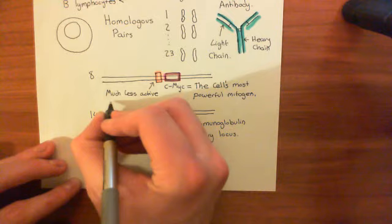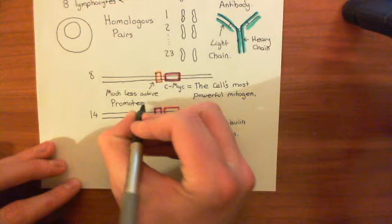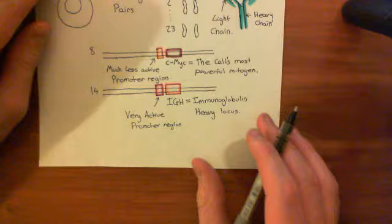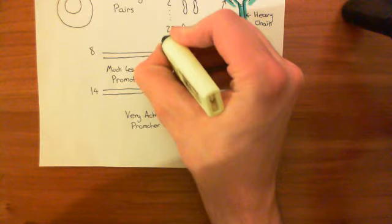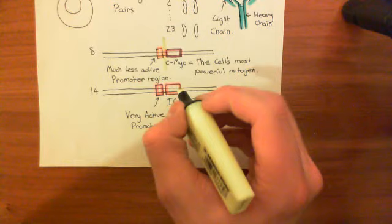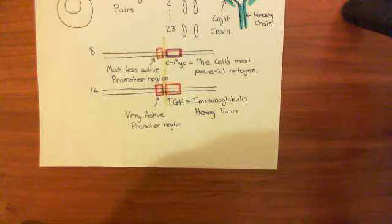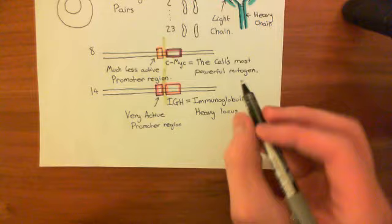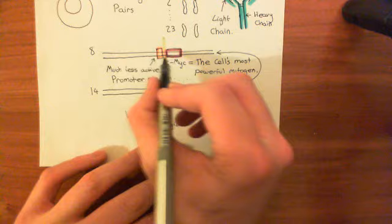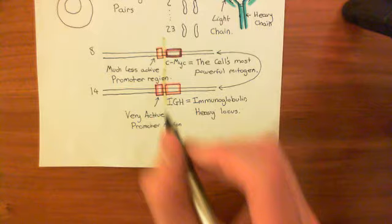What's going to happen is a translocation of the CMYC gene so that it ends up being controlled by this much more active promoter region. You're going to cut chromosome 8 there, cut chromosome 14 down here as well, and swap these two fragments over. When the DNA repair happens, the fragment from chromosome 14 will be stitched onto chromosome 8, and the fragment from chromosome 8 will be stitched onto the end of chromosome 14.